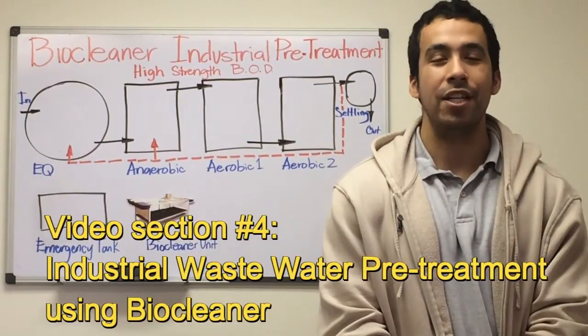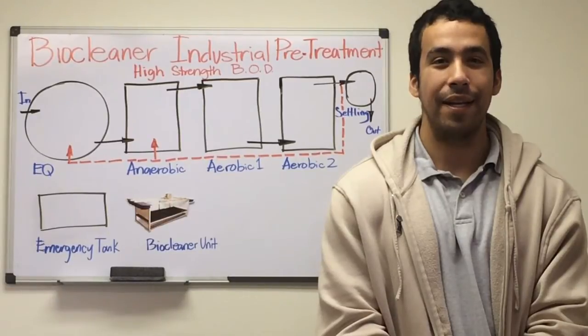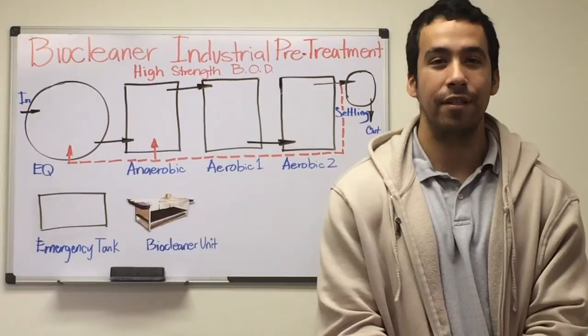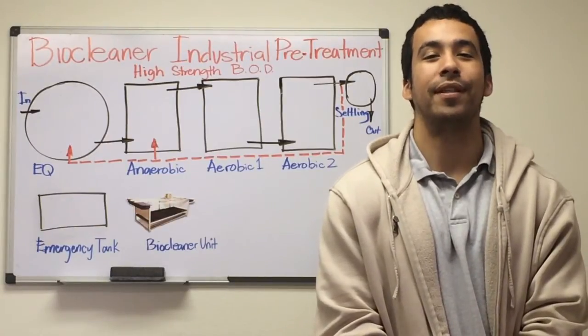This is video section 4 on industrial pretreatment with biocleaner. This video will show how I designed an industrial wastewater pretreatment facility using biocleaner technology. Some advantages of using biocleaner technology include less capital cost, less operational cost, less footprint, reduced sludge handling and processing, odor elimination, and much more.